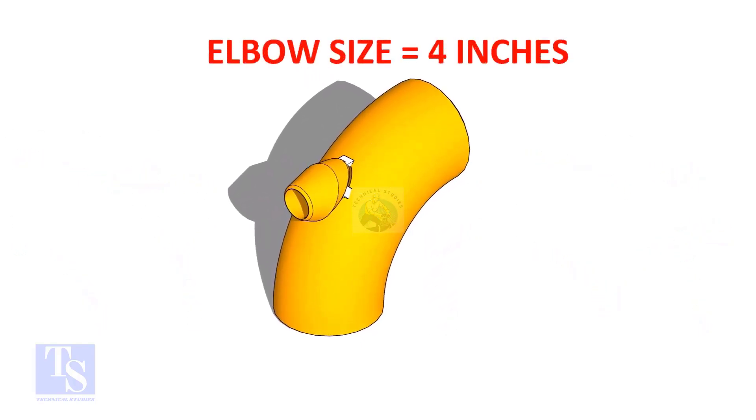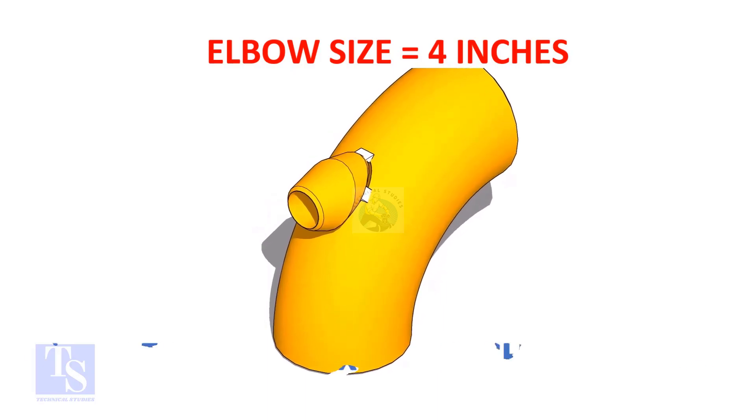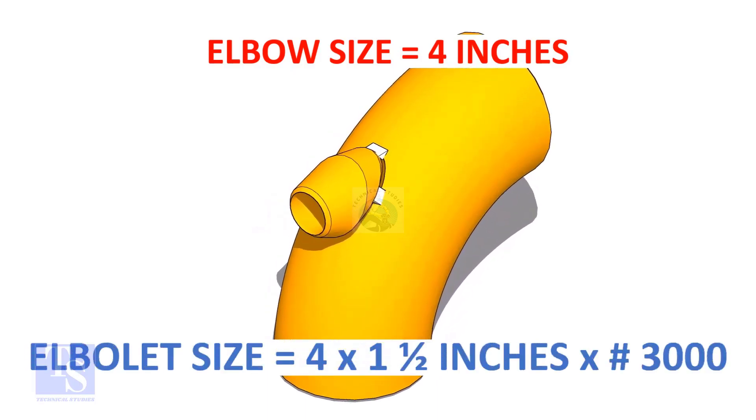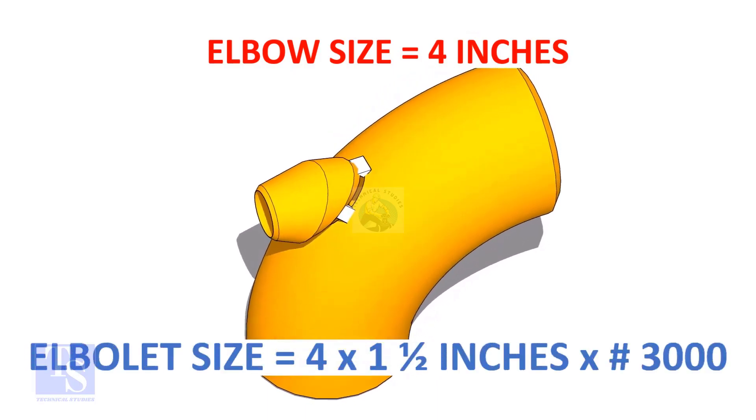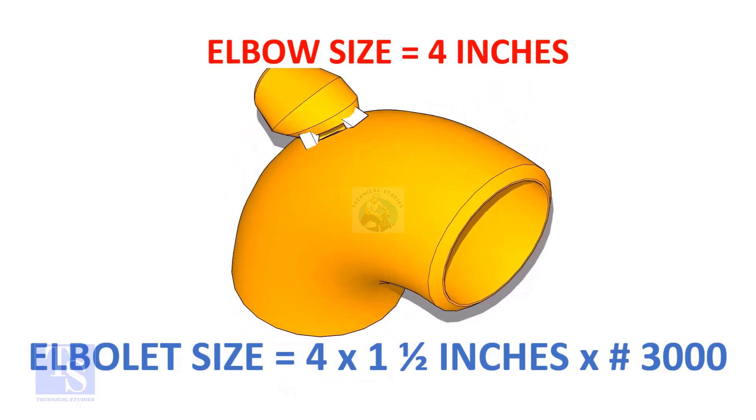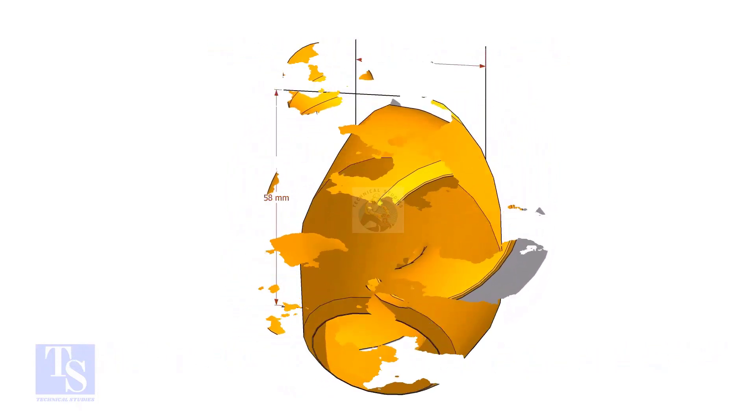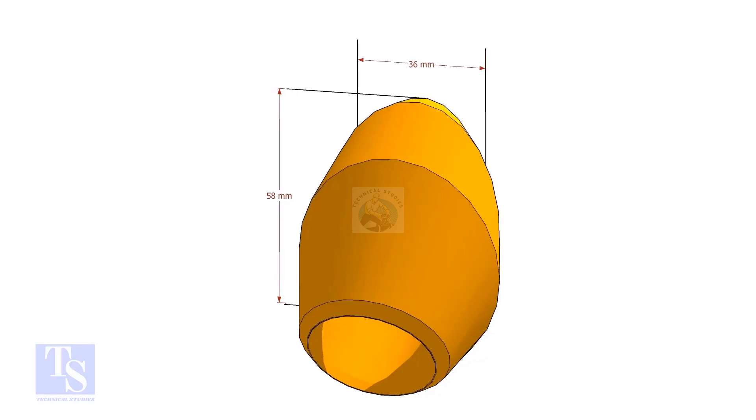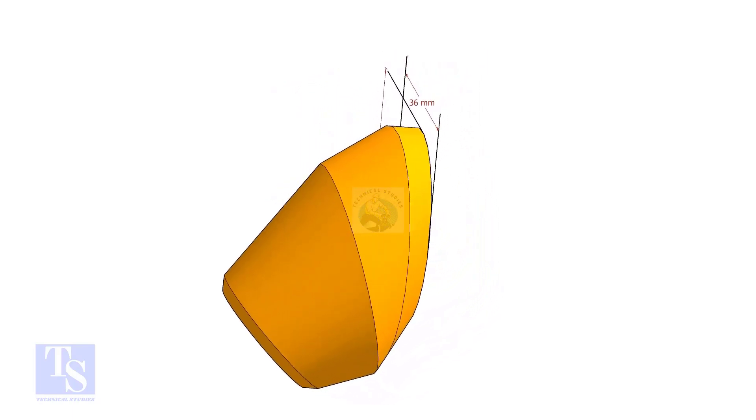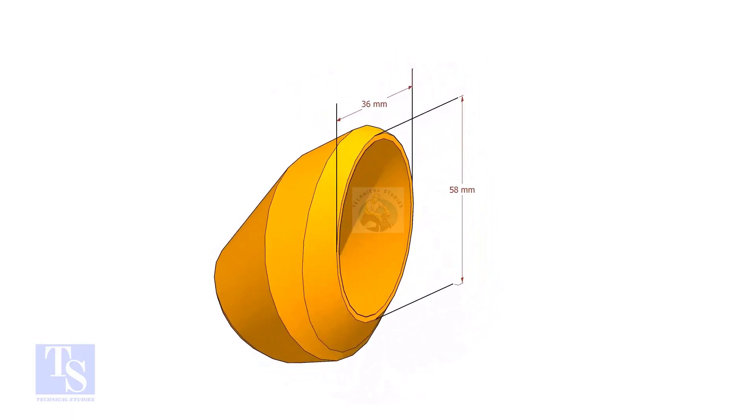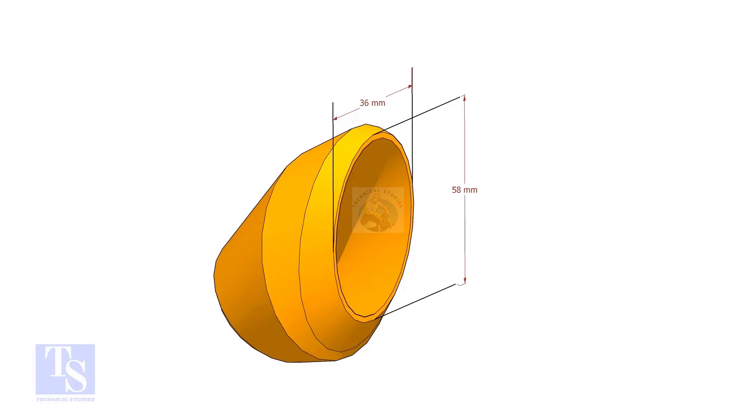The size of our elbow is 4 inch. The size and rating of the elbowlet is 1.5 inch and 3,000 pounds respectively. The bottom opening size of the elbowlet is 36mm into 58mm. Please note down these dimensions.